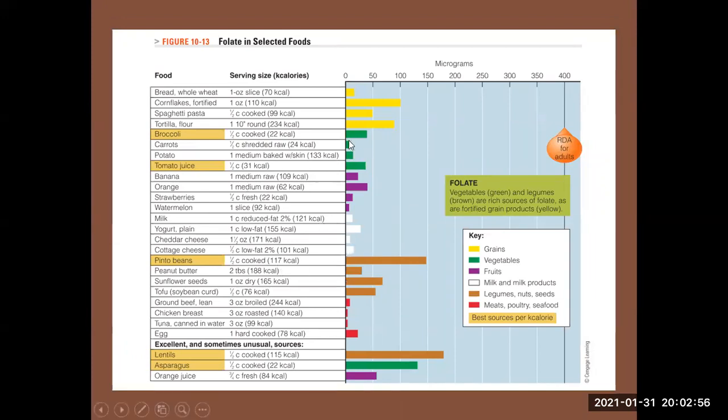As you can see, folic acid is abundant in carbohydrate-containing foods, broccoli, tomato juice, pinto beans, lentils, and asparagus.